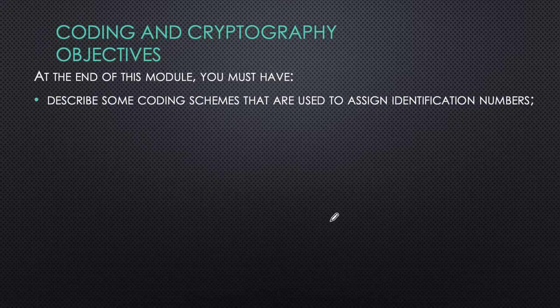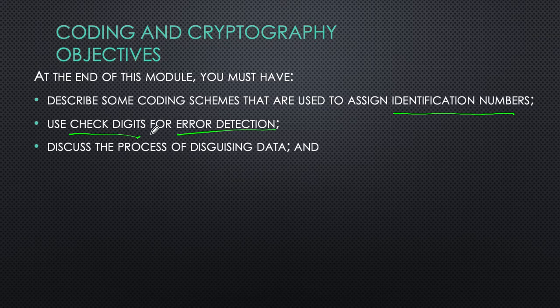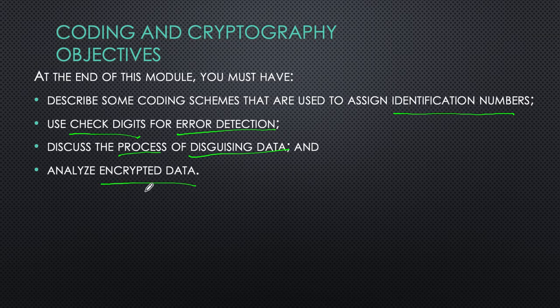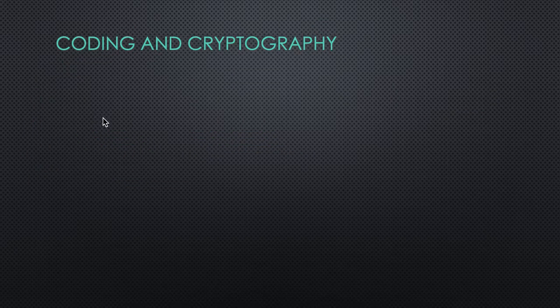The objectives of this first part of the lesson are: by the end of this module, you must have described some coding schemes used to assign identification numbers, used check digits for error detection, discussed the process of disguising data, and analyzed encrypted data. Specifically in this video, we're going to focus on the first two objectives, and deal with the second two in the next video.